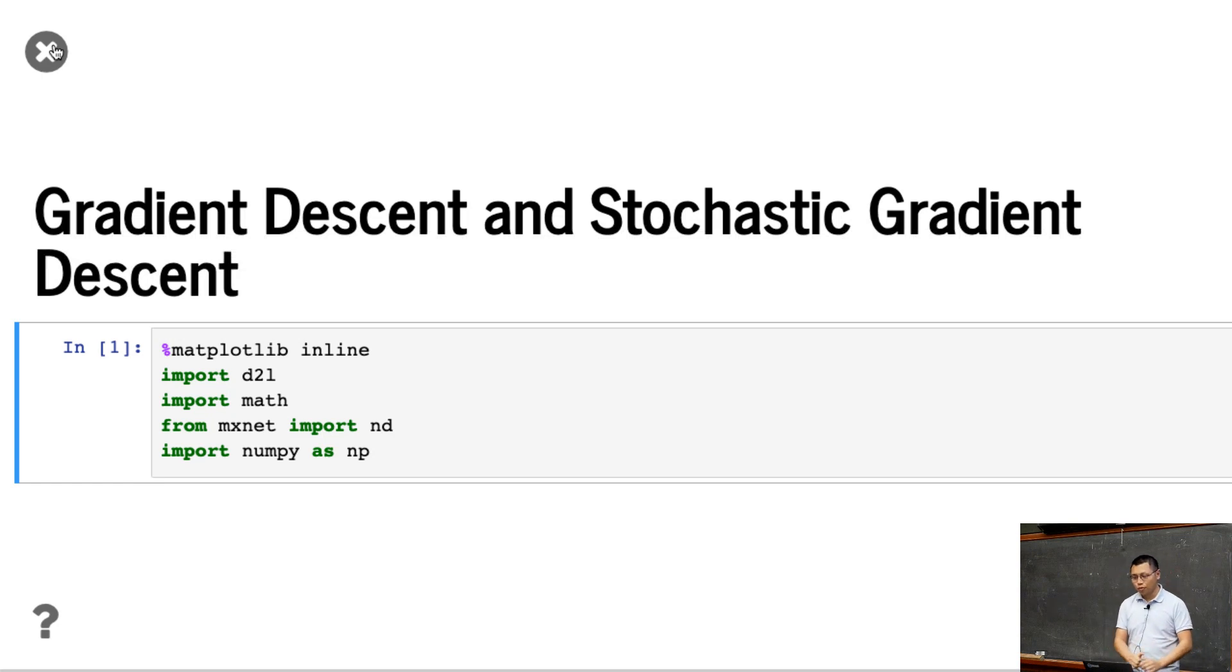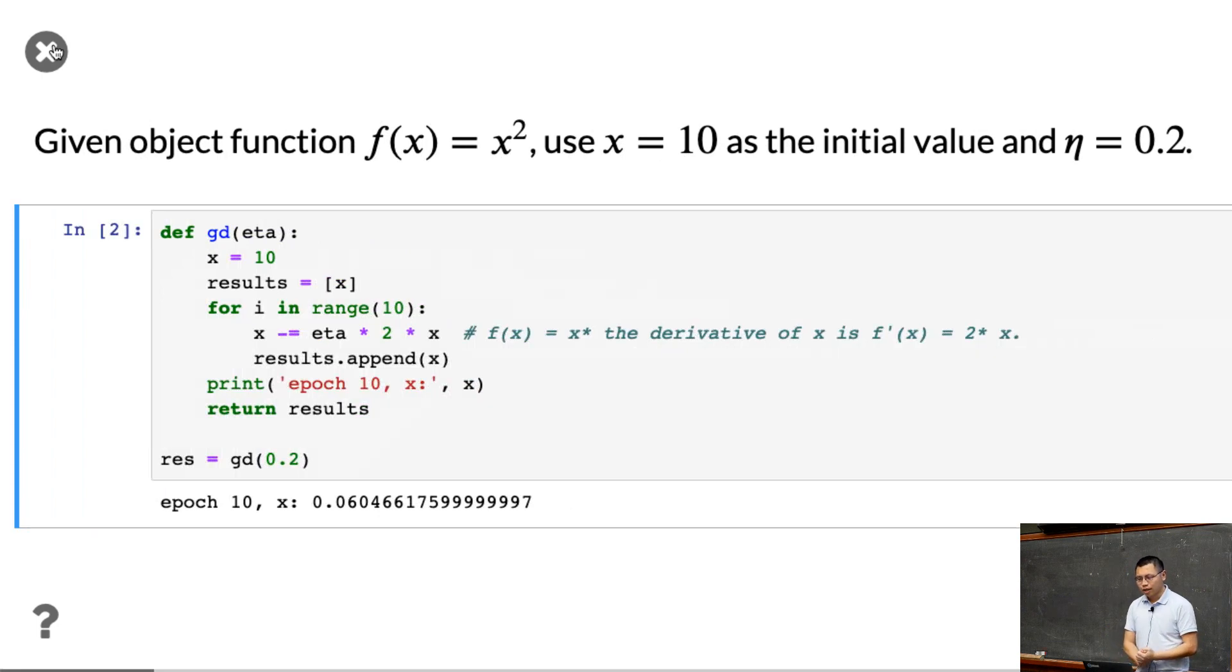We already showed that before. It's pretty quick. And the idea we already use a lot during the past lectures. So here we show a very simple example. Given f(x) = x², I use x = 10 as the initial point using learning rate eta = 0.2. So the idea is very simple. You start with x = 10 and run 10 epochs. And each time we learning rate times the gradient of the function and update x. And finally, we can return, okay, what is the value? You can find, okay, the x is pretty close to 0. 0 is the optimal. It's convex. We know the minimum is a global minimum.